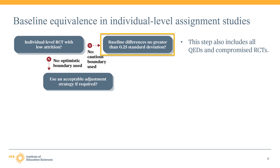The WWC measures the differences between the intervention and comparison groups on a baseline characteristic using a standardized mean difference effect size. The WWC assesses baseline equivalence on each outcome measure to determine whether differences at baseline were small, meaning the groups were equivalent, or moderate, meaning the analysis requires a statistical adjustment to account for pre-existing differences, or large, meaning the groups were too different at baseline to meet WWC standards even with statistical adjustment. The effect size is expressed in standard deviation units based on the variation of the baseline measure in the analytic sample.